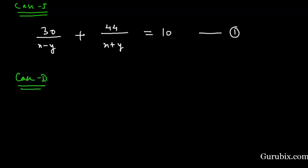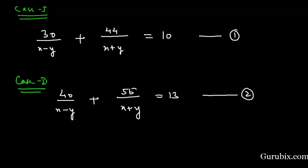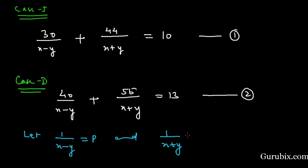In case 2, we are given that the boat goes 40 km upstream and 55 km downstream in 13 hours. Adding the two times gives us equation number 2. Now we shall solve these two equations by converting them into linear equations. For that, we let 1 over (x minus y) equal to p and 1 over (x plus y) equal to q.